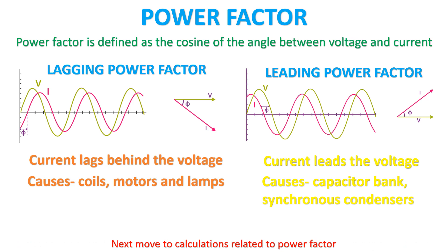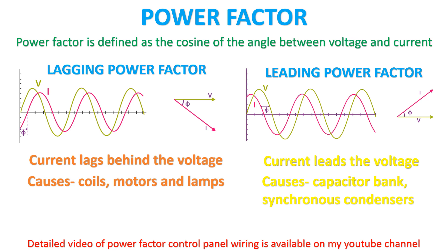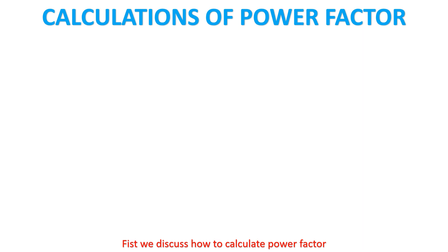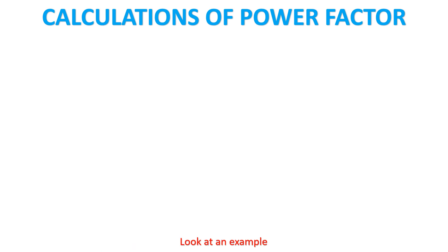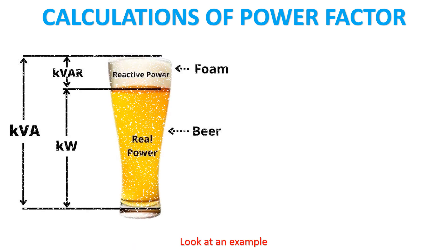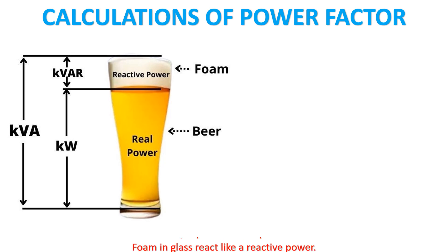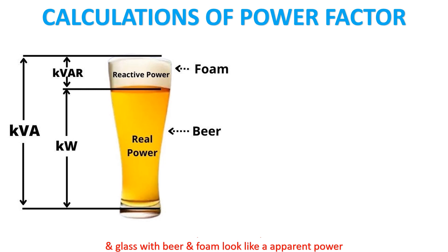Next we move to calculations related to power factor. A detailed video of power factor control panel wiring is available on my YouTube channel. First we discuss how to calculate power factor. Power factor is like a glass of beer, which contains some real power and reactive power. Foam in the glass acts like reactive power, beer acts like real power, and the glass with beer and foam looks like apparent power.